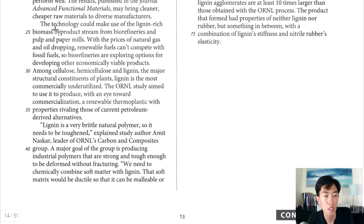Since they replaced one of the materials with lignin, now they're going to talk more about lignin. It says this technology could make use of the lignin rich biomass byproduct stream from biorefineries and pulp and paper mills. So basically they're saying these industries probably have lignin as a byproduct in their own processes. With the prices of natural gas and oil dropping, renewable fuels can't compete with fossil fuels. So biorefineries are exploring options for developing other economically viable products. Usually renewable fuels are a lot more expensive than fossil fuels and so that's why they're proposing this idea of using the lignin stuff because it is sort of a byproduct of these other industries. And they do say lignin is the most commercially underutilized material.